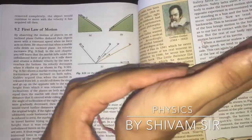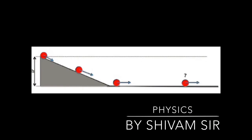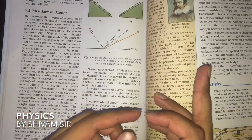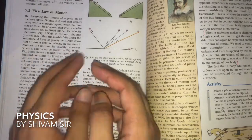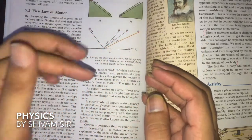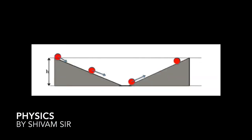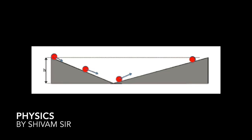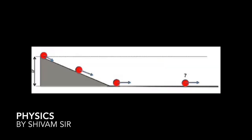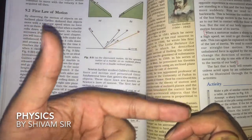In the fourth observation, the right-side plane was made completely flat — zero inclination. When the marble was released, it kept moving forward uniformly with uniform speed; it did not stop. It remains in motion because it is trying to reach the same height from which it was released, but since the plane is flat, that height is never achievable, so it keeps moving forever.